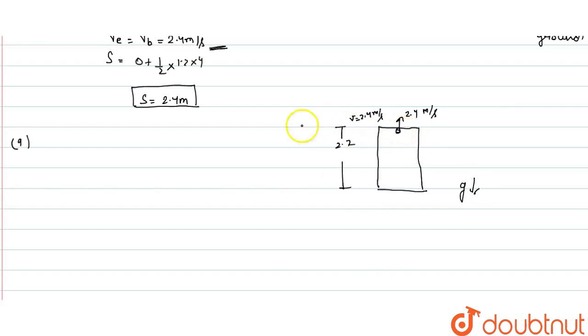This time free fall means we have lost. This time what will happen? We have given the constant acceleration of lift is 1.2 meter per second square.